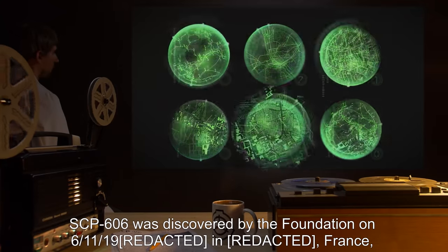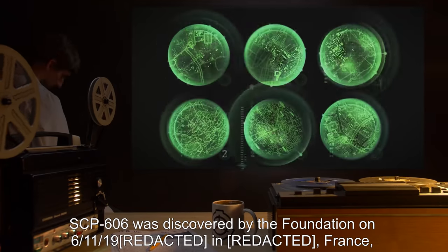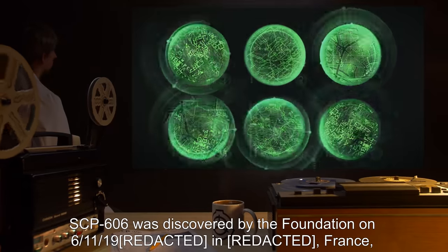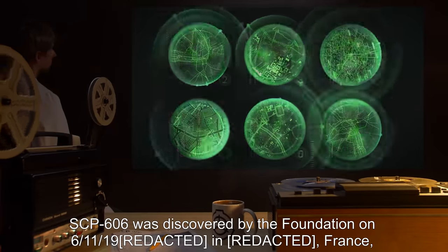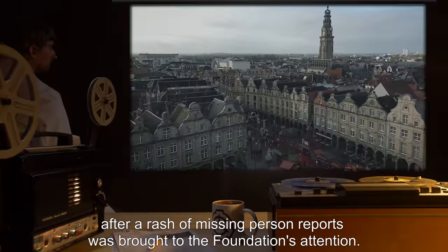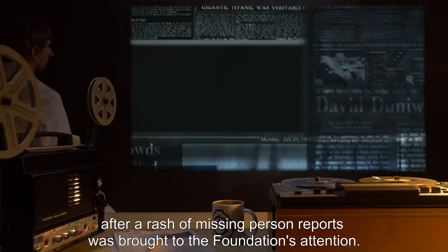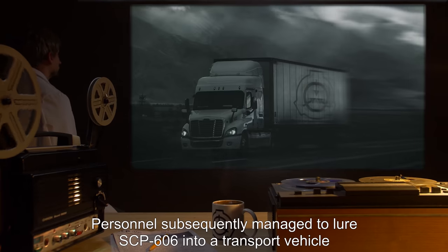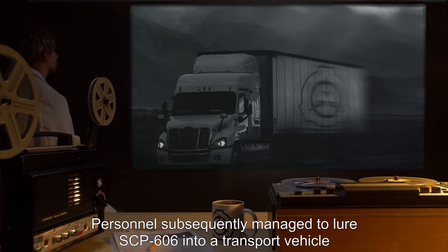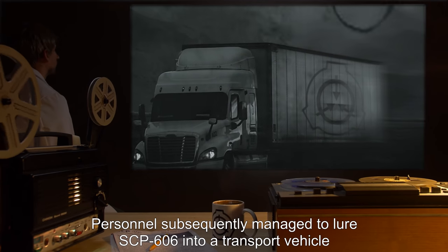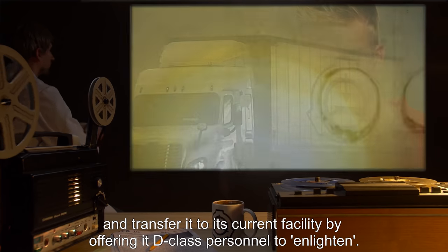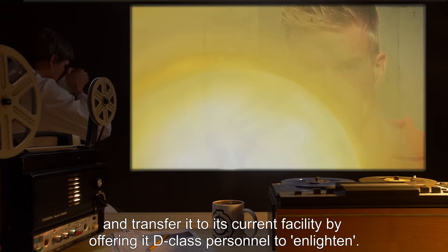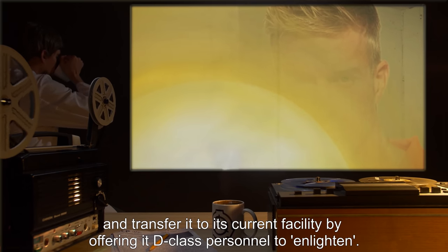SCP-606 was discovered by the Foundation on 6-11-1919 in France, after a rash of missing person reports was brought to the Foundation's attention. Personnel subsequently managed to lure SCP-606 into a transport vehicle and transferred to its current facility by offering it D-class personnel to enlighten.